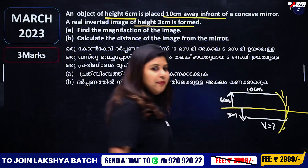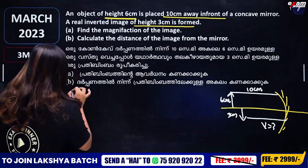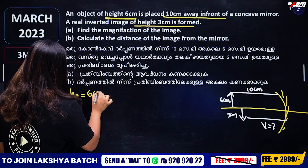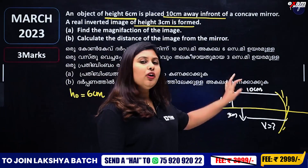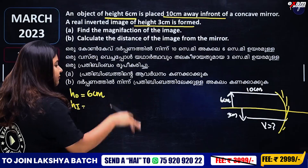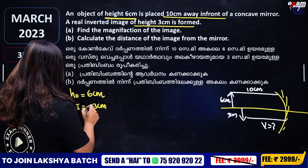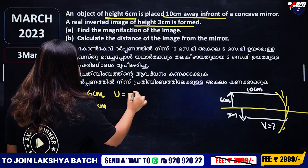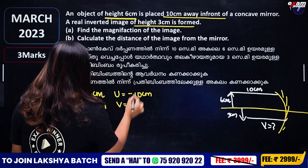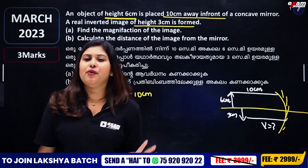The image is 3 cm. Height of the object is 6 cm, that is positive 6 cm. Height of the image is minus 3 cm — height of the image is negative. The object distance is 10 cm. Find the magnification of the image.